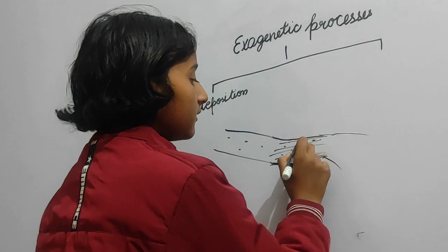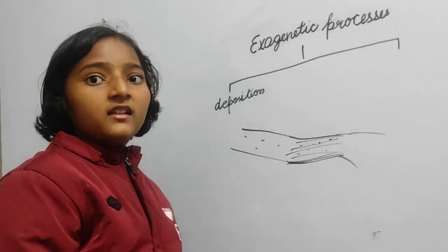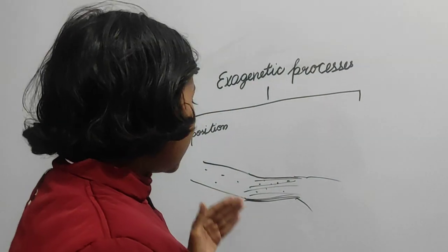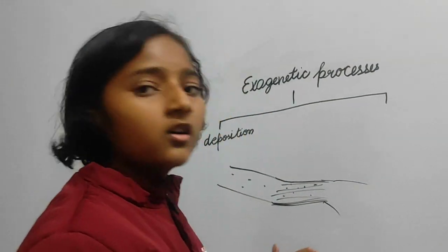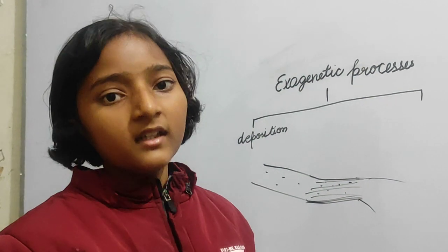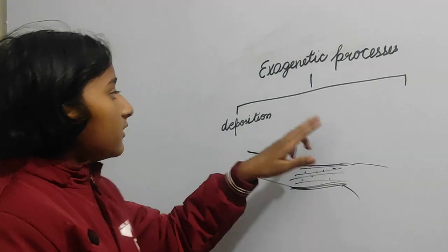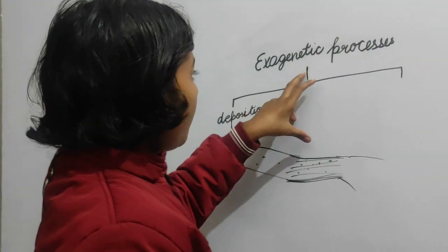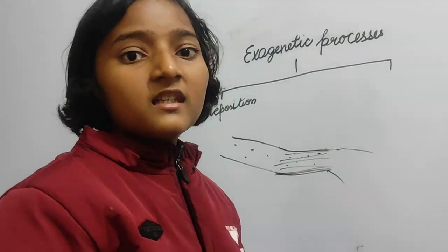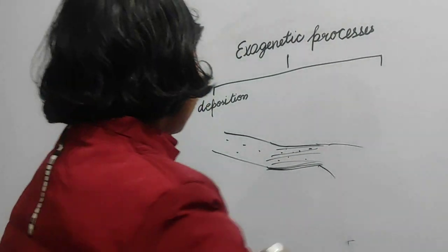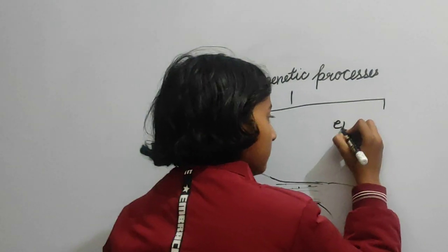So the northern plains are the deposition plains — they are formed by the deposition of the silt that is brought by the Ganga. Now, the second type of exogenetic process is erosion.